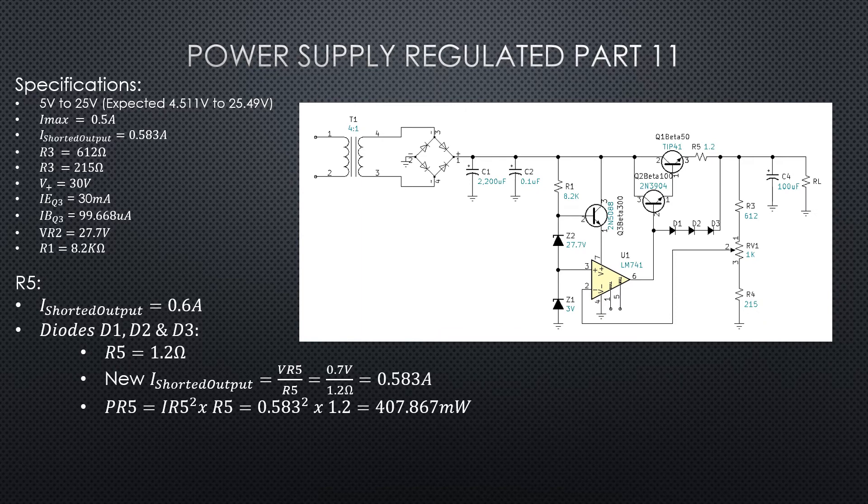So we've got our new R5 set to a standard value of 1.2 ohms. Let's go ahead and figure out what our new circuit current regulation value of current is going to be. If we divide our VR5 by our R5 actual, we're going to do 0.7 volts divided by 1.2 ohms. We can see that this circuit will now limit at 0.583 amps.